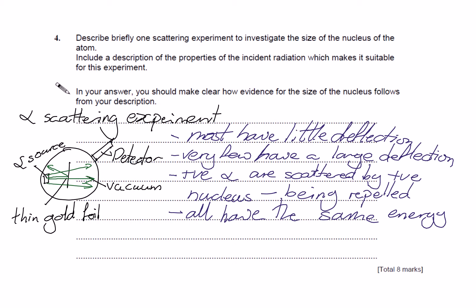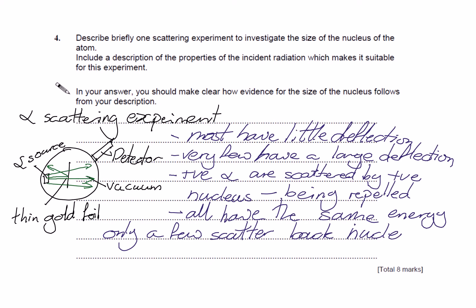As the question requires, we need to be clear how the evidence for the size of the nucleus follows from our description. The fact that only a very few scatter back tells us that the nucleus must be very small — tiny in comparison to the atom.